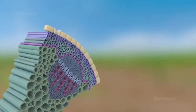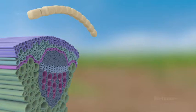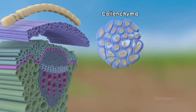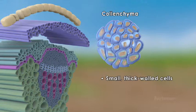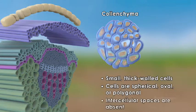If we were to look at a cross section of a dicot stem, we would be able to recognize the first layer of the epidermis. Adjacent to the epidermis is the colenchyma, a layer of small thick-walled cells. The cells are spherical, oval or polygonal in shape. The cell wall is thickened at the corners and intercellular spaces are absent.